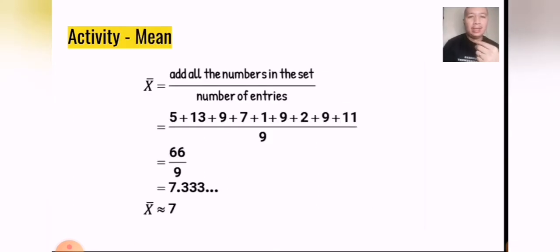So for mean, first what you would have to do is add all the numbers in the set and then divide it by the total number. Here we have added 5 plus 13 plus 9, 7, 1, 9, 2, 9, and 11, which equals 66. You divide it by 9, and then your answer is 7.33. So 7.33 is our mean.